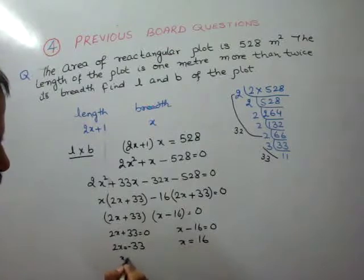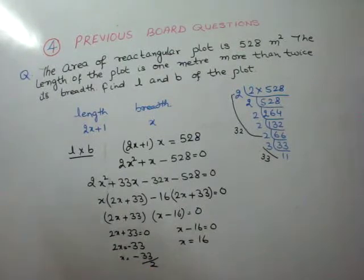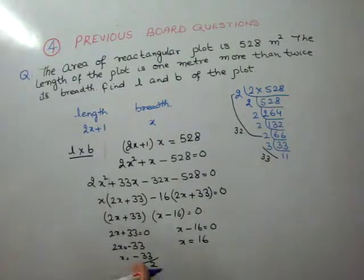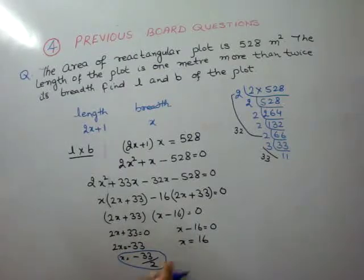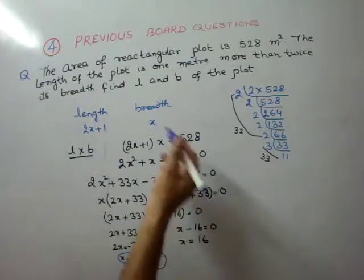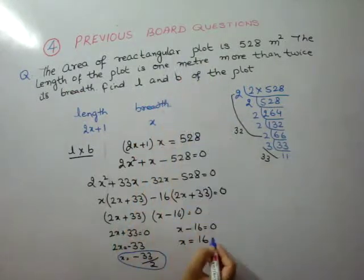So x is equal to minus 33 by 2. Since the length can never be negative, we ignore this value. Therefore x is equal to 16 meters.